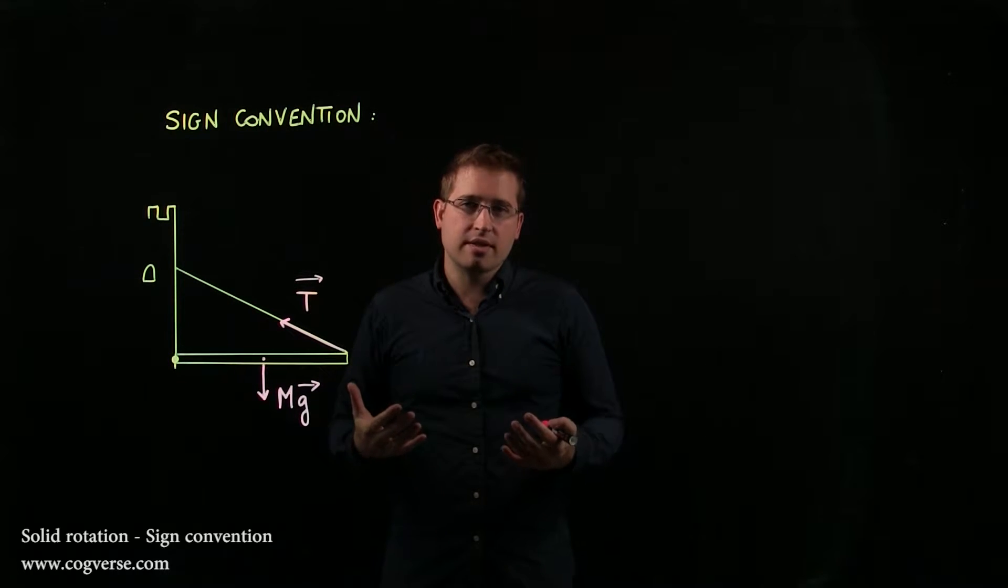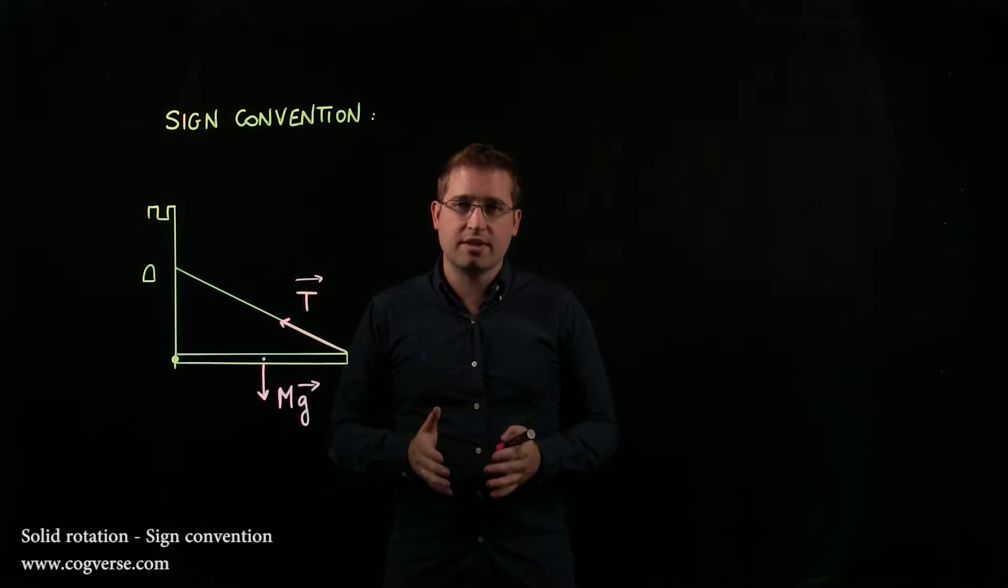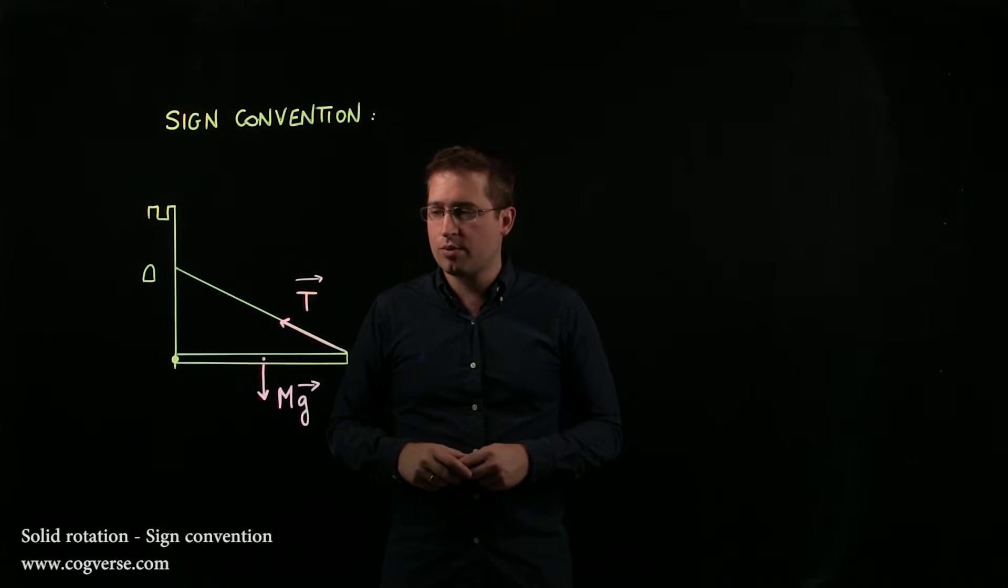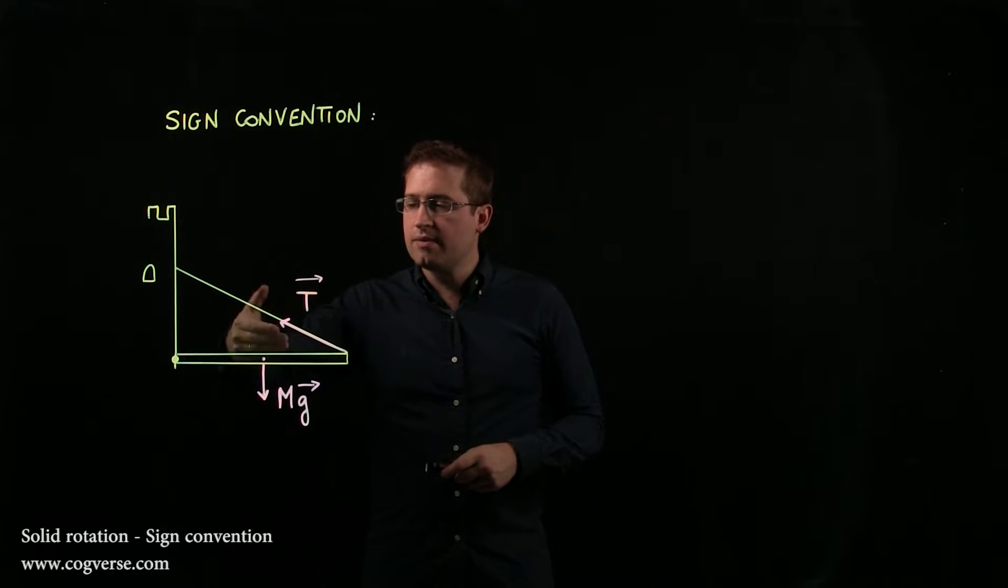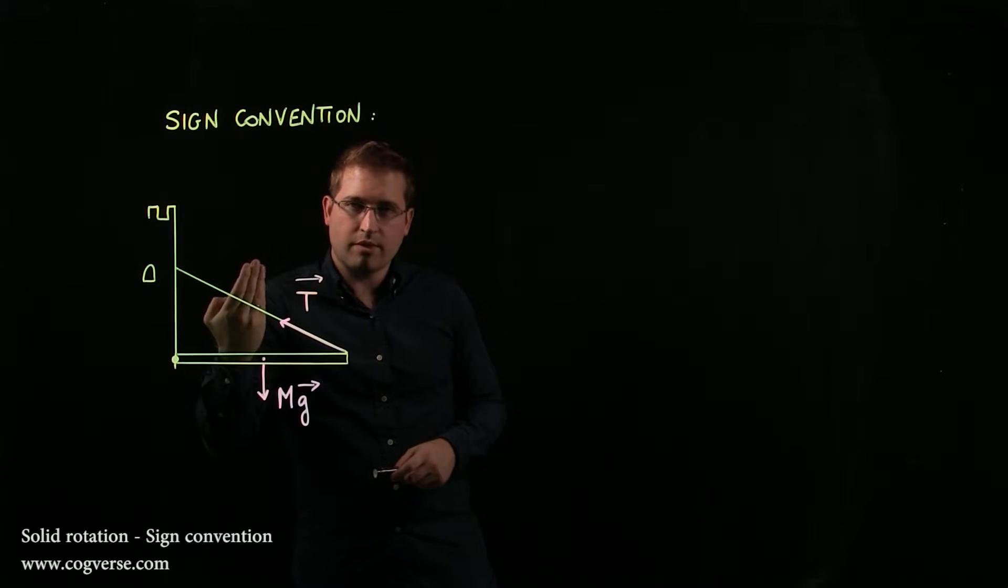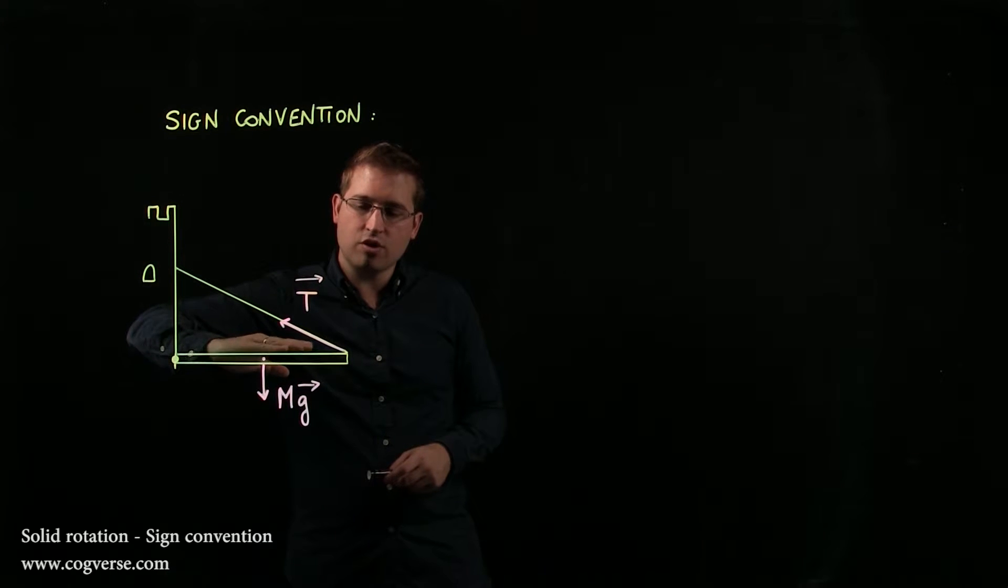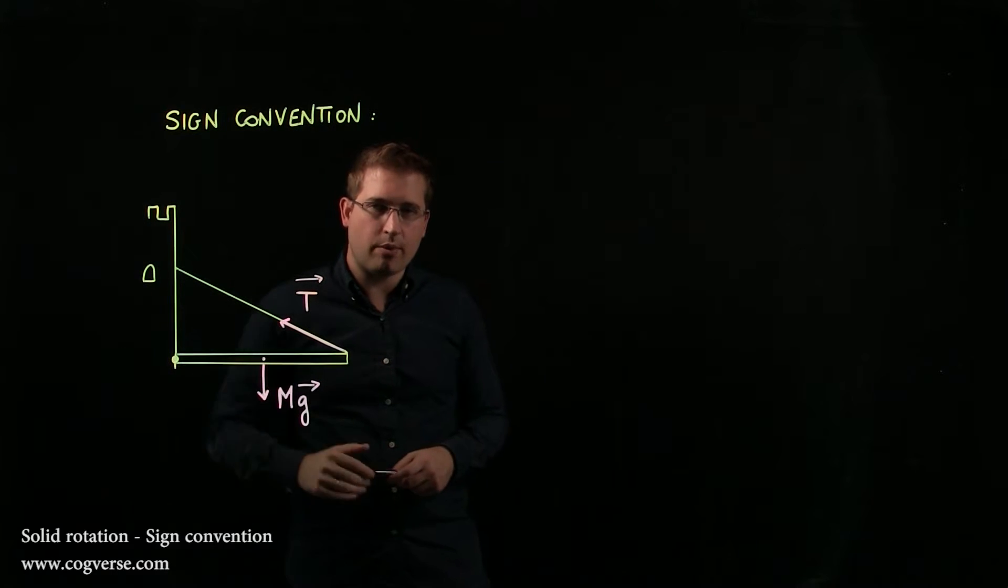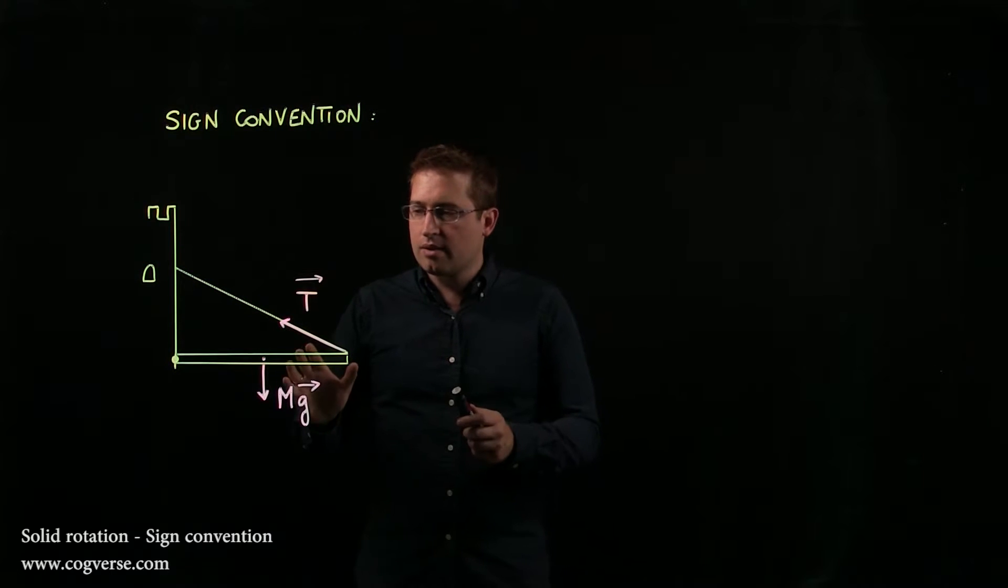What's really important is that these two forces are trying to do opposite things when it comes to rotation. T is trying to rotate the bridge this way whereas MG is trying to rotate it that way.